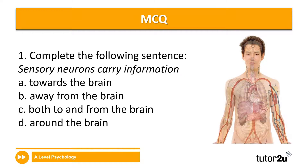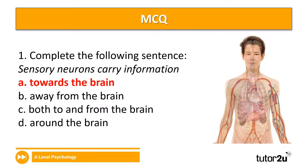Now we're going to take a look at two multiple choice questions, and we're going to put the answers into question 15 in your worksheet. Question one: complete the following sentence — sensory neurons carry information. Is it A, towards the brain; B, away from the brain; C, both to and from the brain; or D, around the brain? The correct answer is A, towards the brain, because they travel from the peripheral nervous system into the central nervous system.